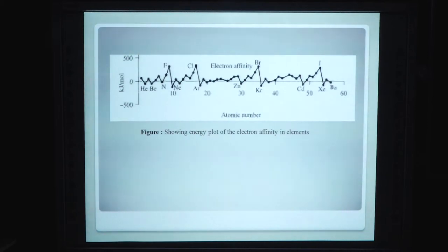This shows energy plot of electron affinity in elements. Here electron affinity of helium is below 0 kilojoule per mole and it increases further for other elements. Beryllium is below, nitrogen is below, and maximum electron affinity for fluoride, chloride and bromide.